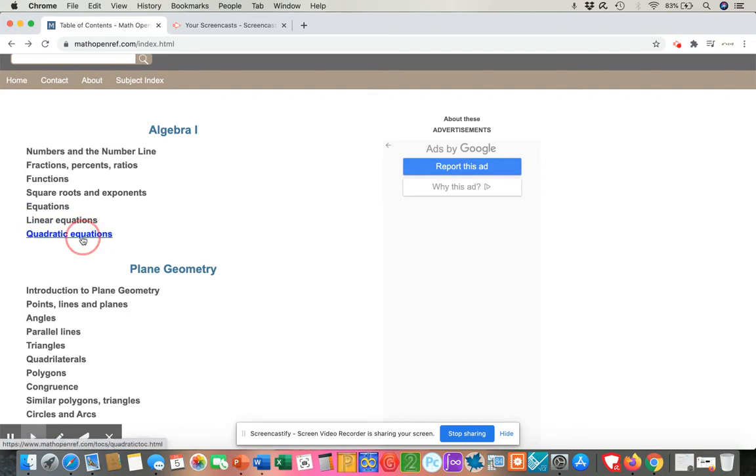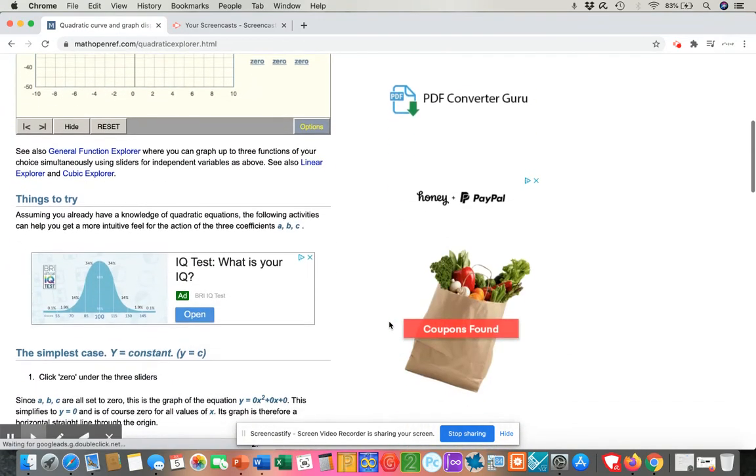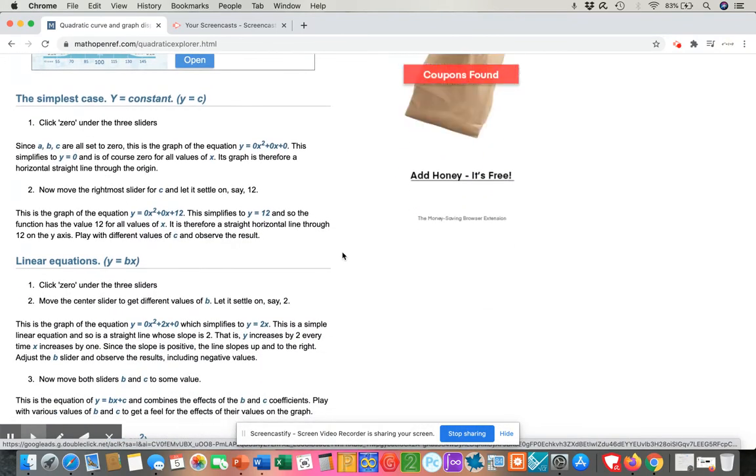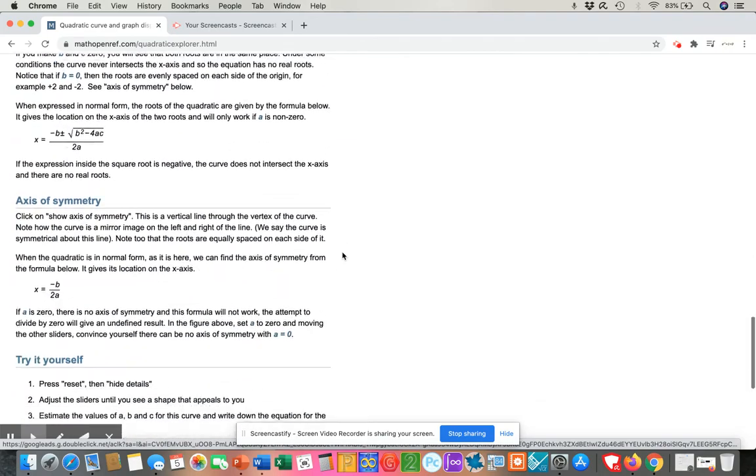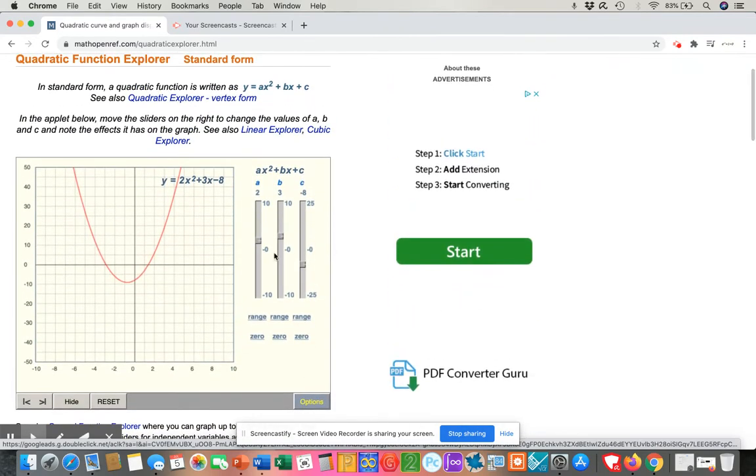So let's say that you were exploring quadratic equations. Let's say that you were looking at the standard form of a quadratic equation. So the first thing that I want you to notice is that you have some information, some definitions, information about the roots, the axis of symmetry. And then you have this very cool applet that allows you to play with the coefficients and to see what effect it has on the graph.